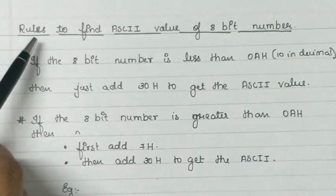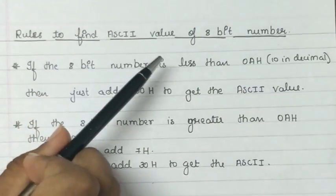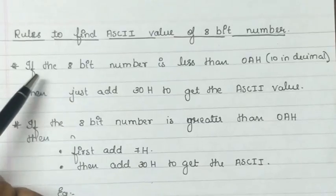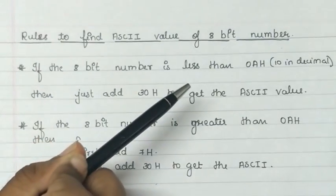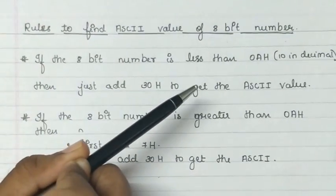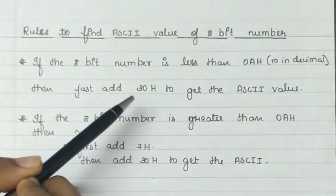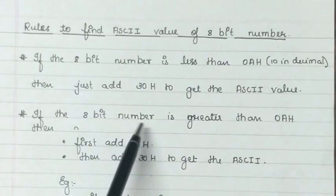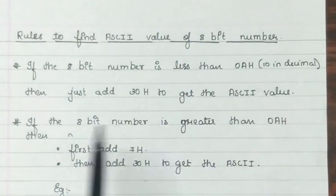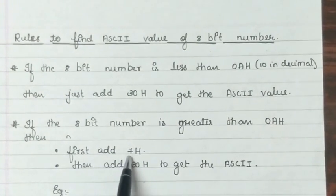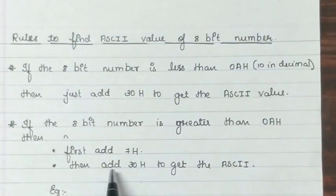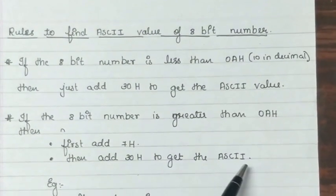Let us now go through the rules to find the ASCII value of an 8 bit number. If the 8 bit number is less than 0ah, i.e. 10 in decimal, then just add 30h to get the ASCII value of that number. If the 8 bit number is greater than 0ah, then first add 7h to the number and then add 30h to get the ASCII code.